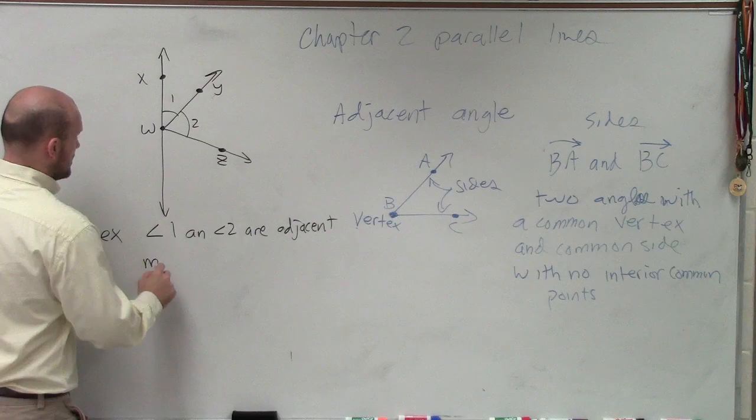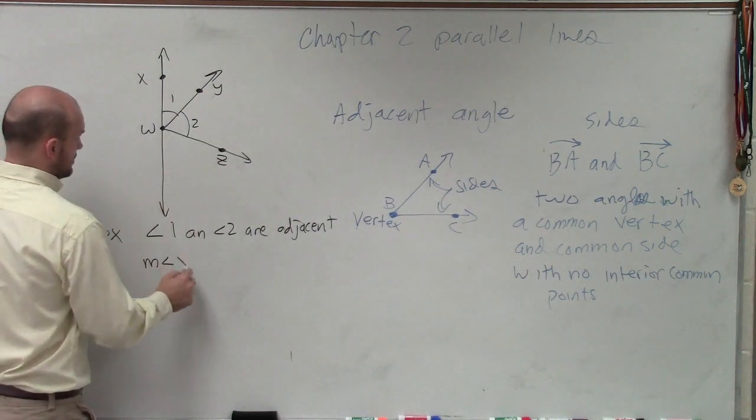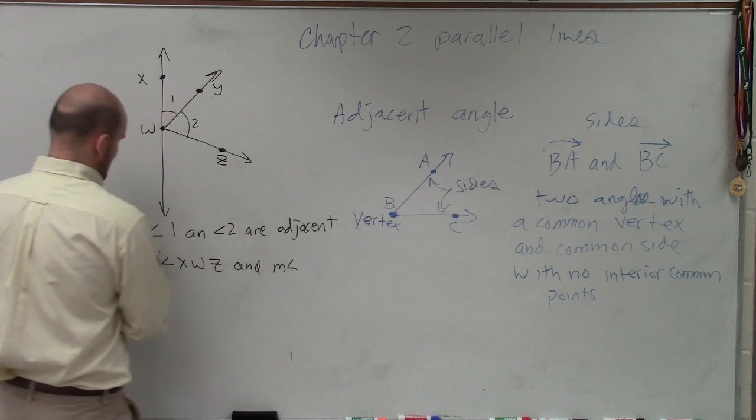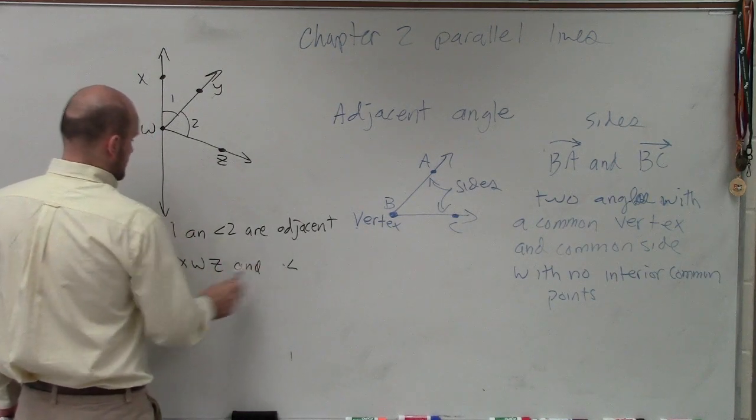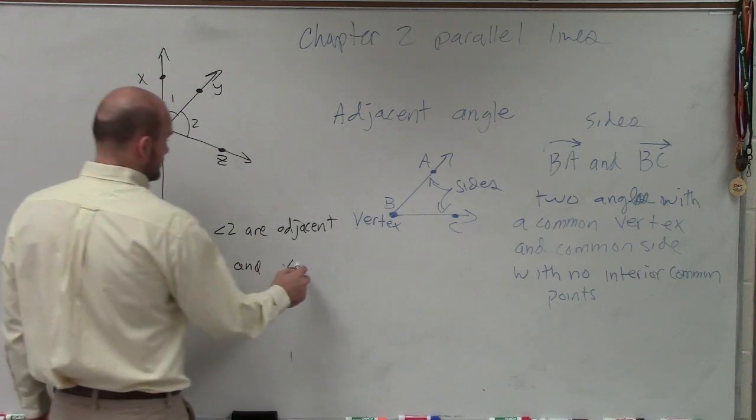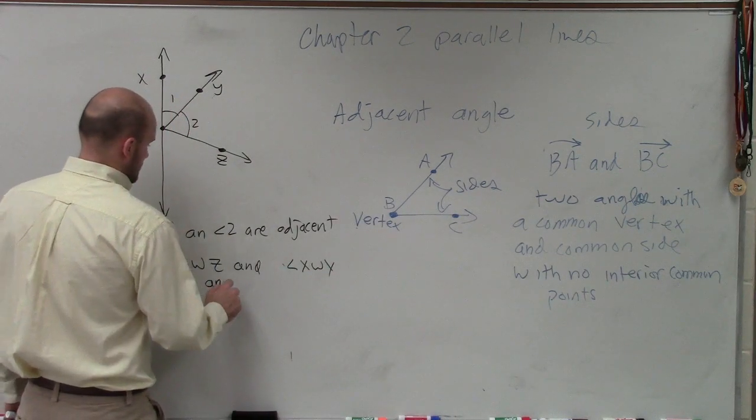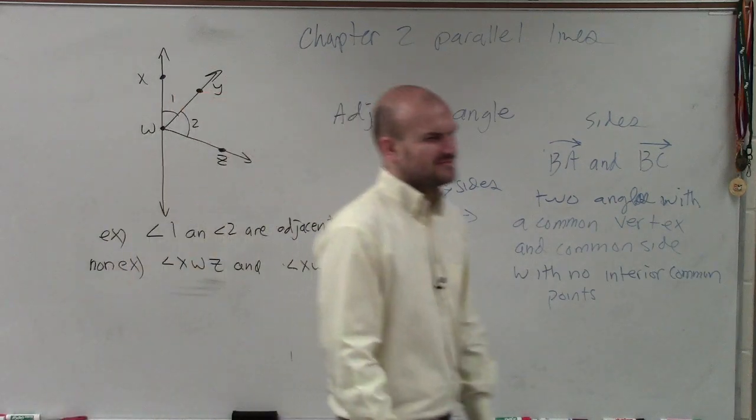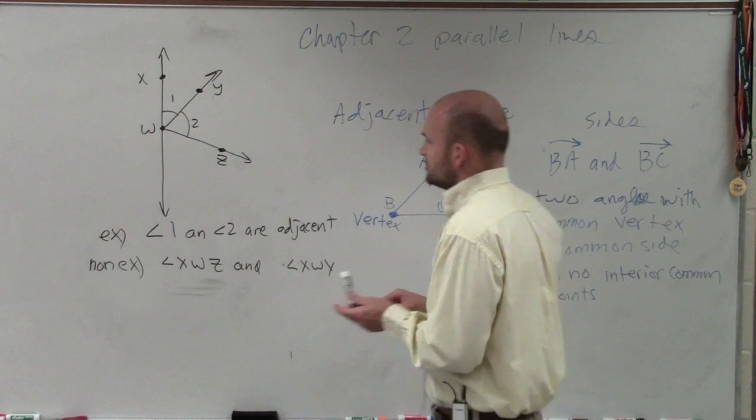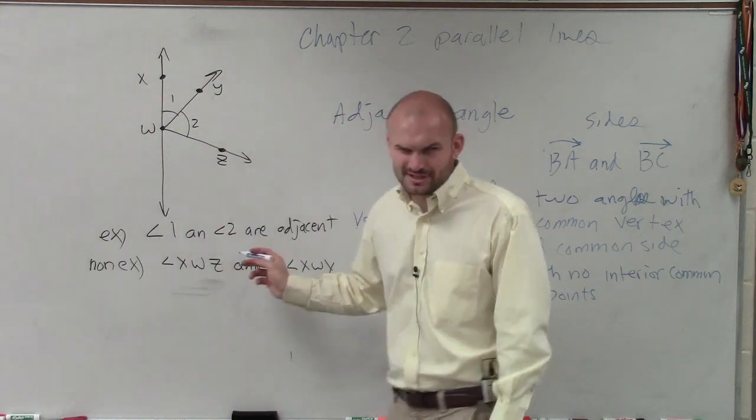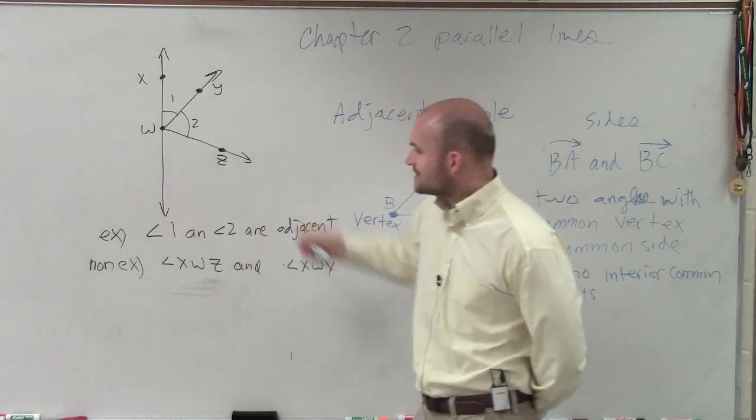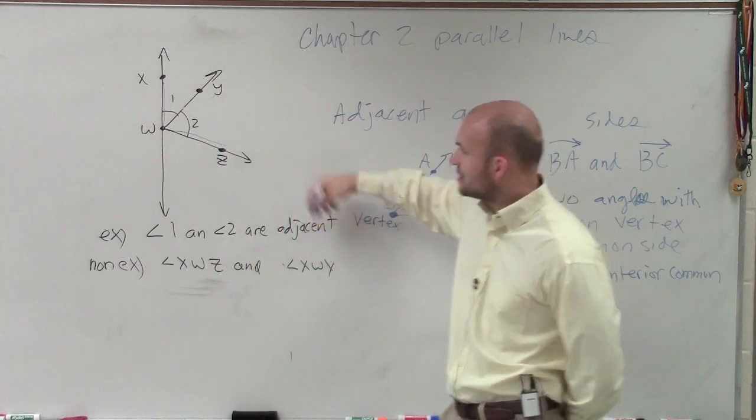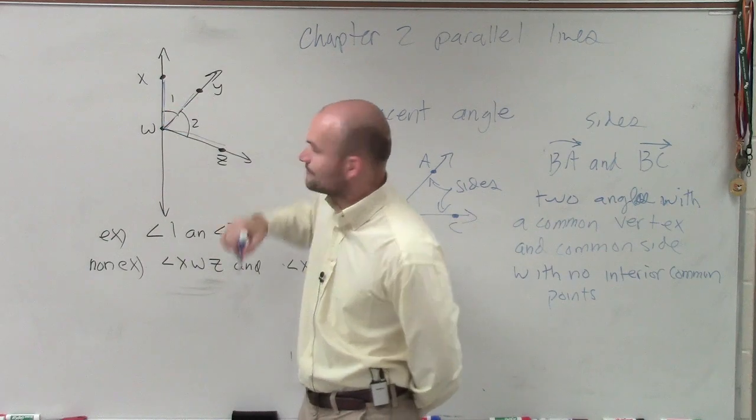Here's an example of non-adjacent angles. Angle XWZ and angle XWY, here's a non-example. So you might say, well, why are these a non-example? Let's go and take a look at it. So I have angle, and just because I didn't use one and two, there's multiple ways to name angles. Here I have angle XWZ, X to W to Z. Then I have angle XWY, X to W to Y. So those two angles, do they share a common side?